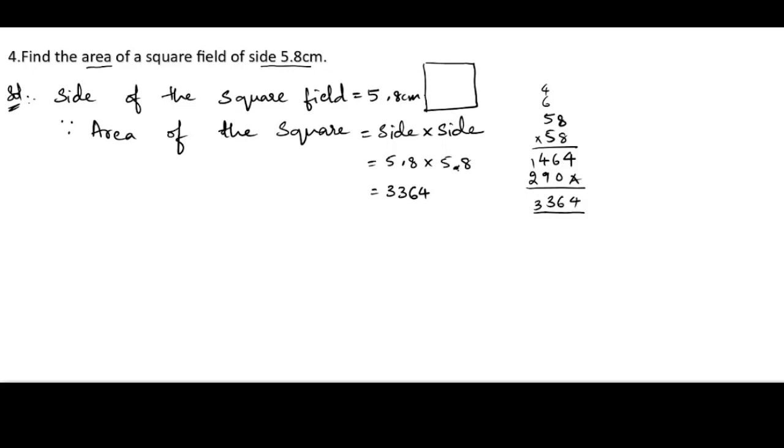The decimal is there after one digit and here also after one digit, so we can put the decimal after two digits. For centimeter we will write, for the area we will get centimeter square. Therefore, area of the square field is 33.64 centimeter square.